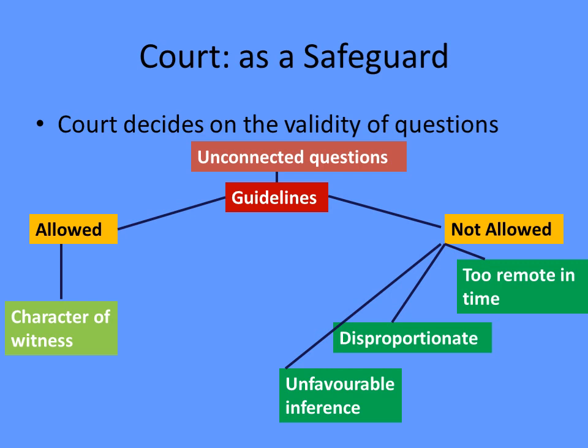The court refuses and asks the advocate to move to the next question, and requests that the party not answer those questions if they are disproportionate. If a witness is called to prove a minor fact not very significant to the case, but the advocate comes out with all guns attacking the witness, and the judge feels the questions are disproportionate to the importance of the witness, the court may ask that those questions not be answered and stop the questioning.